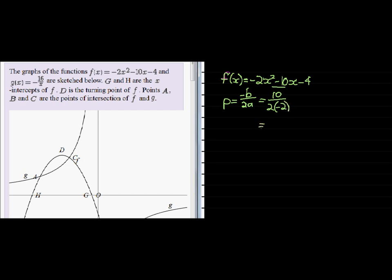Which means my symmetry line, that's going to be the line that goes down here on which we find the maximum value, will be negative 2.5. 10 divided by 4. Negative 2.5.